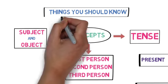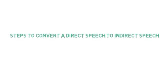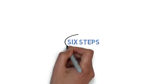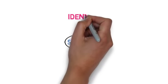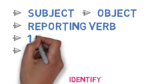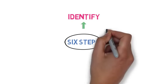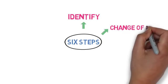So these are the three main things you must know. Now let's understand the steps to convert a direct speech to indirect speech for statements or simple sentences. The first step is to identify — this is the most important step. You need to identify five things: subject, object, reporting verb, first person, second person and third person in the reported speech, and if the reporting verb is in the past form, then the tense of the reported speech. The second step is change of reporting verb.